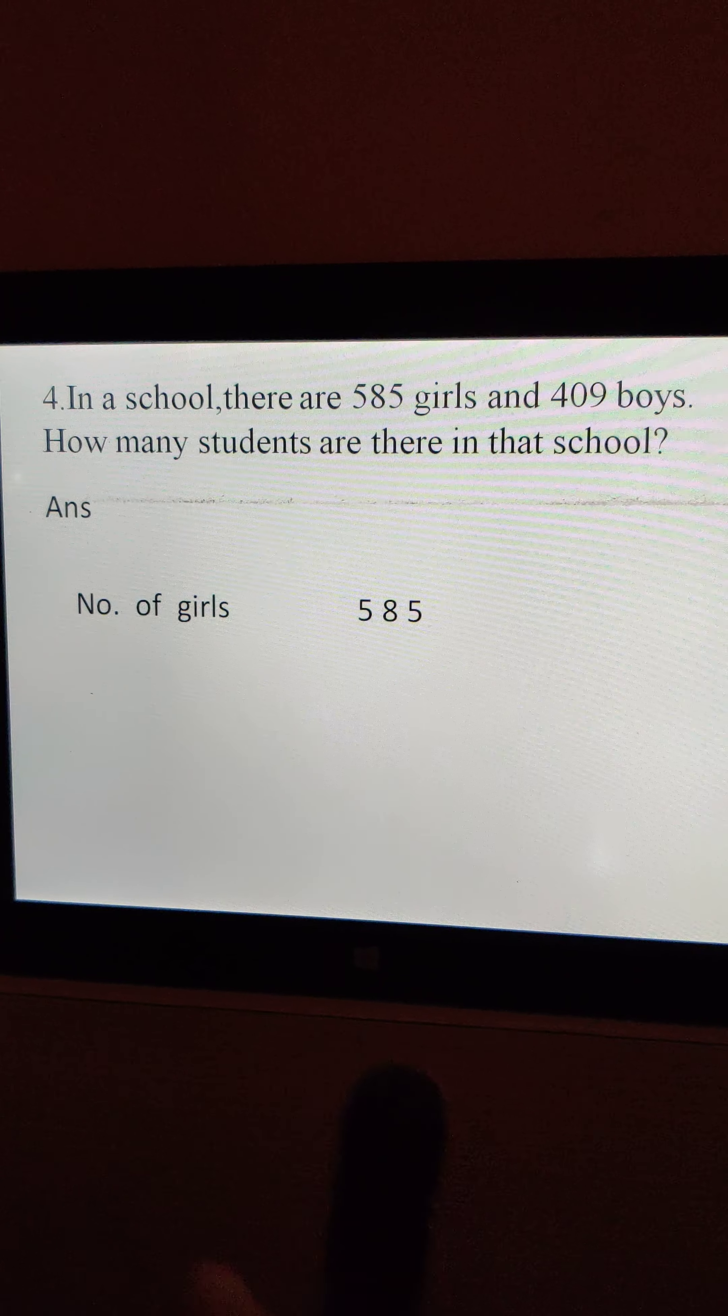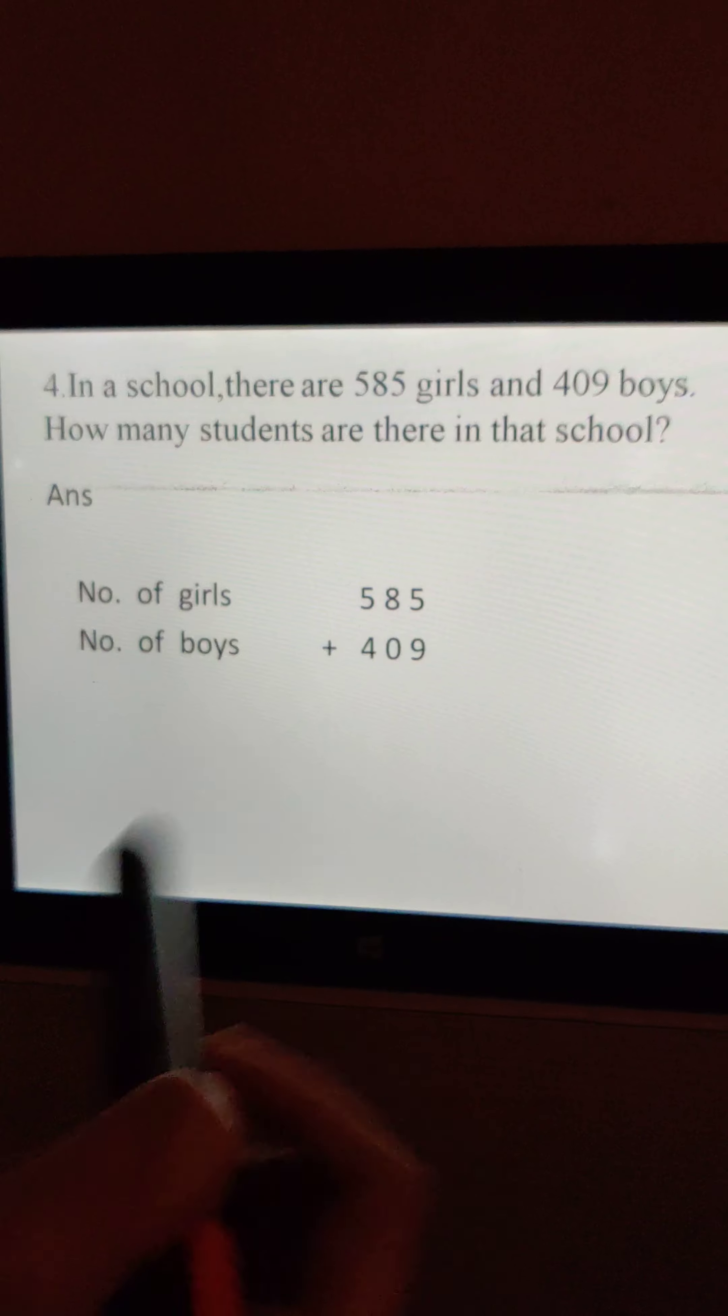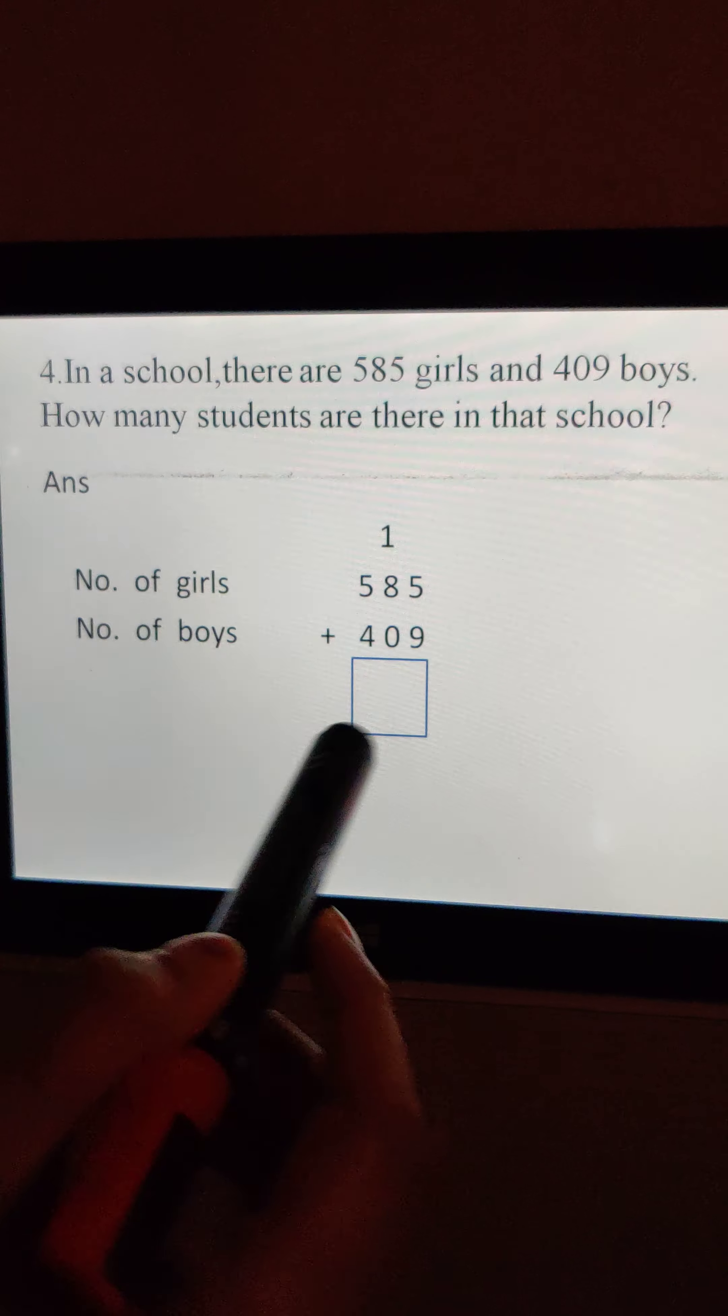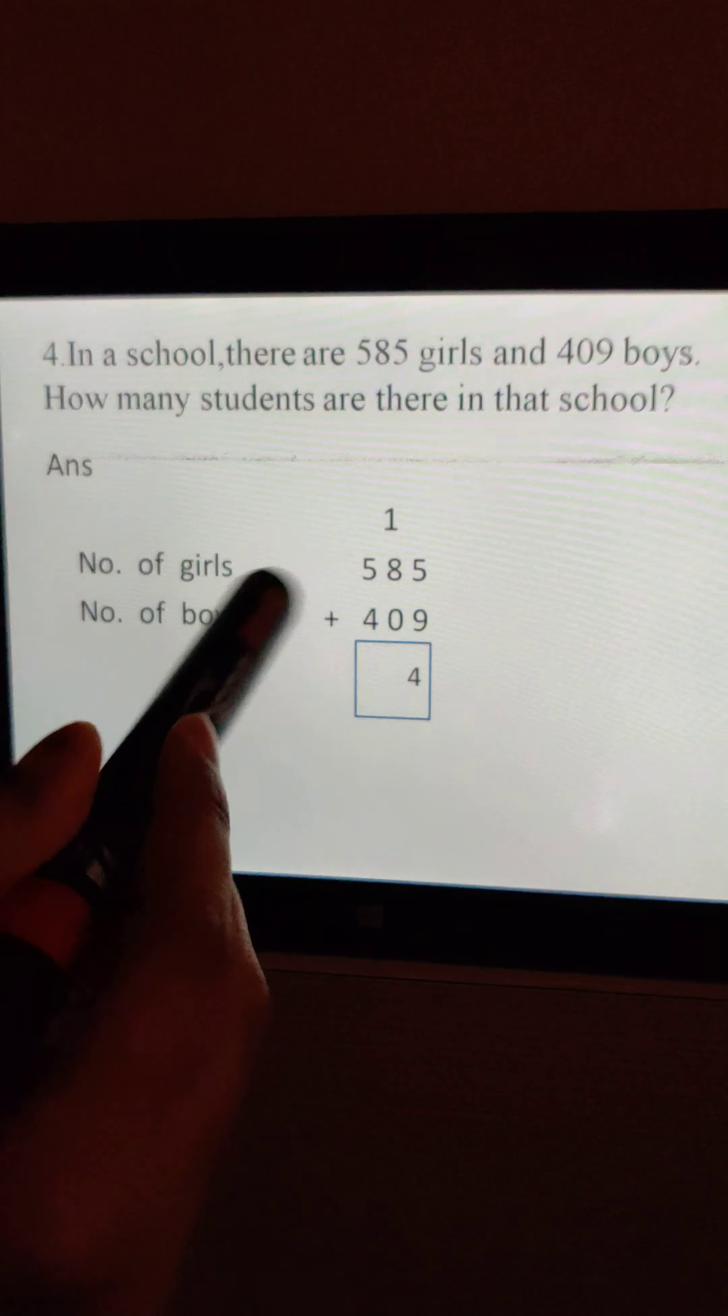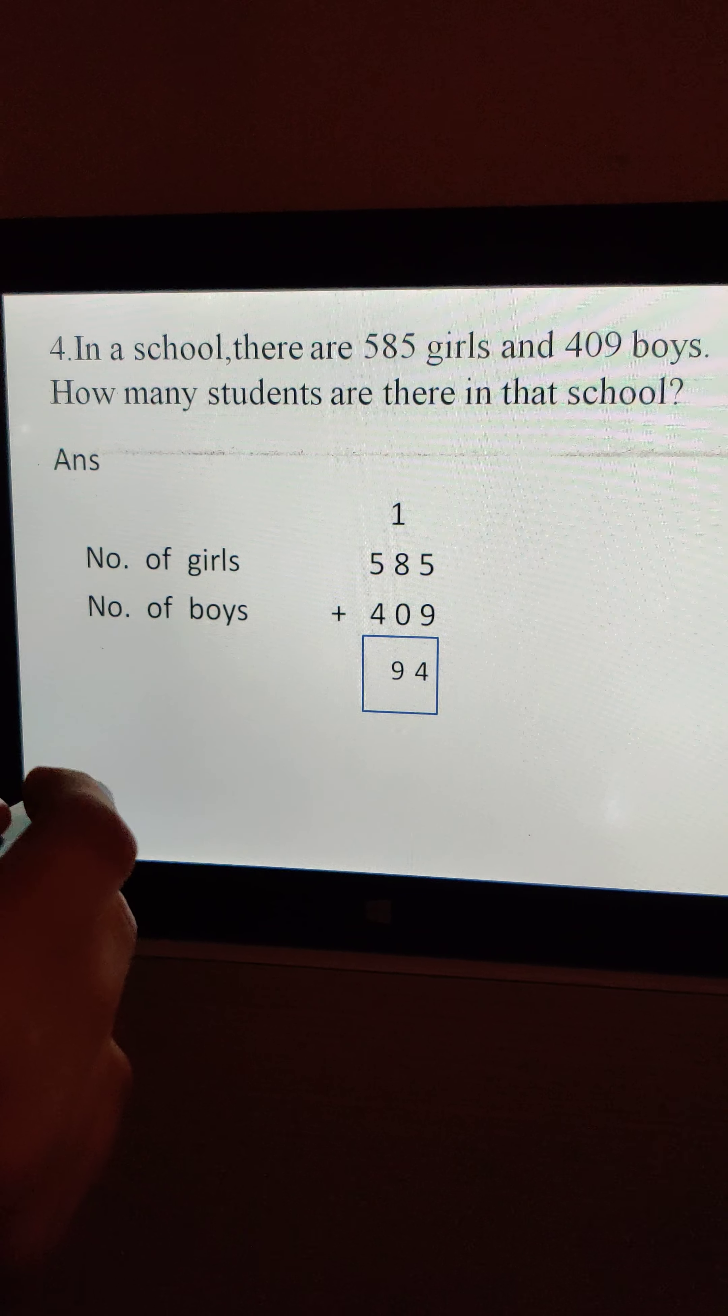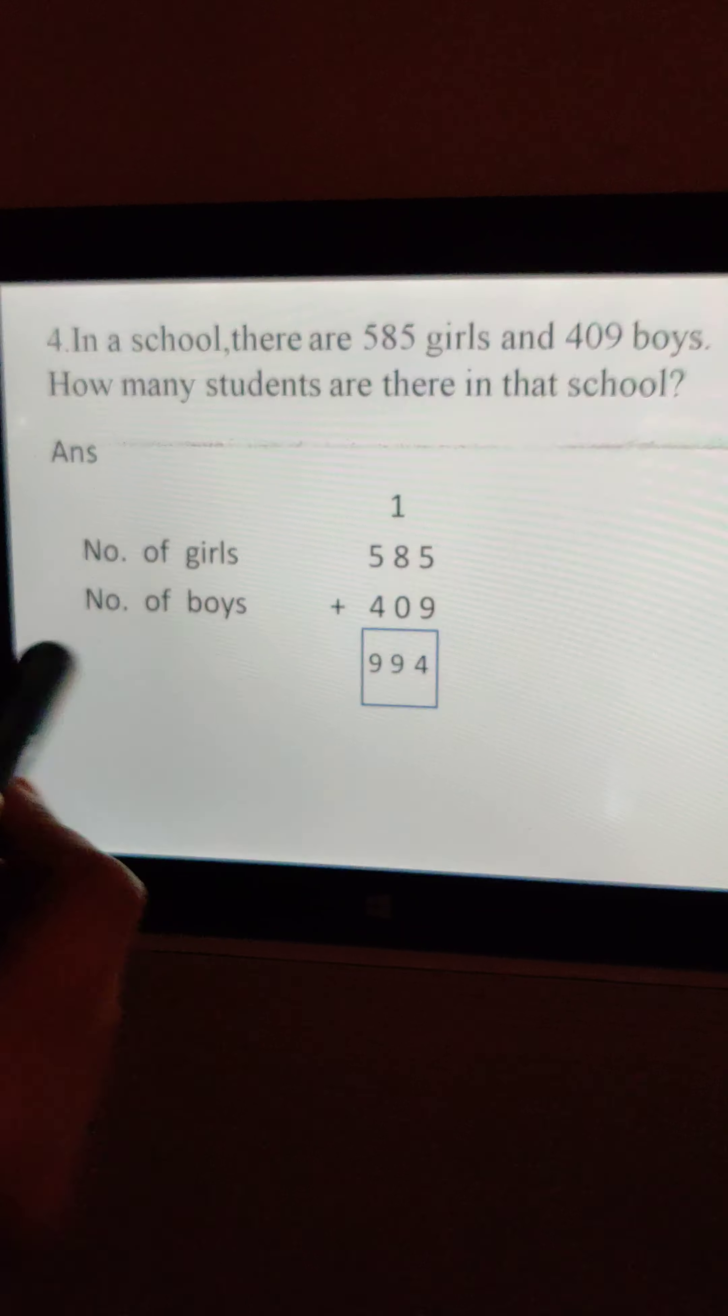Number of girls: how many? 585. Number of boys: 409. So total students, we have to add. 9 plus 5, how many? Yes, 14. So 1 here and 4 here. 8 plus 1, 9. And 5 plus 4, again, 9.